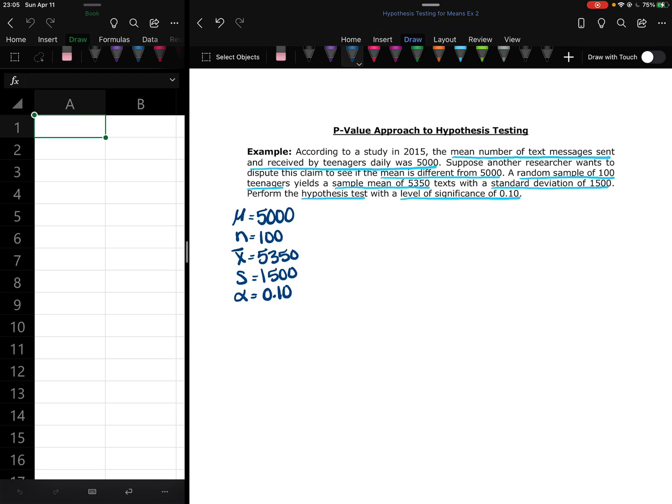So that leaves 5000 to be mu. And again, 5000 is the prior information we're being presented with. So that's going to be what we are assuming is the population mean.